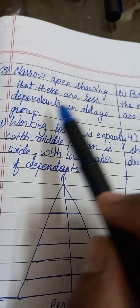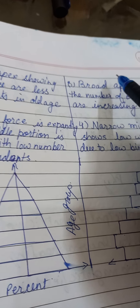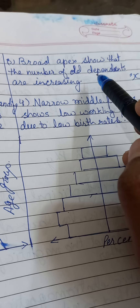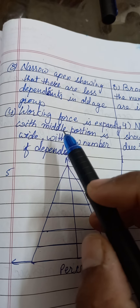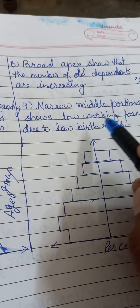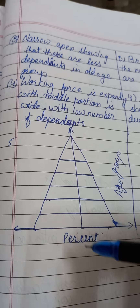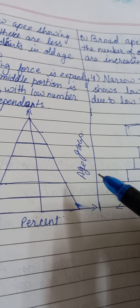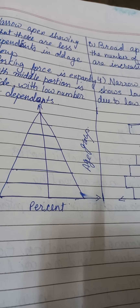First: India's population pyramid has a broad base in younger age groups, whereas Japan's population pyramid has a narrow base. Second: In India, more infants survive to adulthood with development in science and technology and low death rate. In Japan, there is a low birth rate and low death rate. Third: The narrow apex in India shows fewer dependents in the old age group, whereas in Japan the broader apex shows that the number of old dependents is increasing.